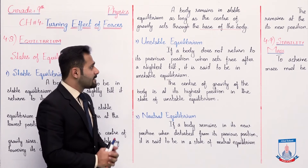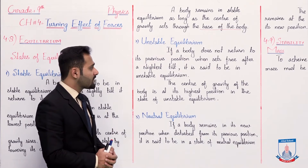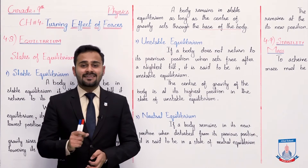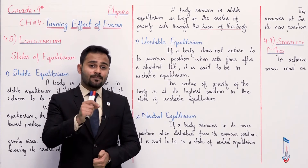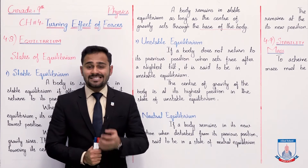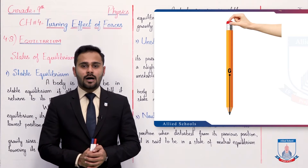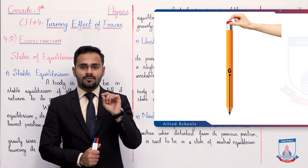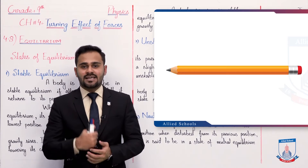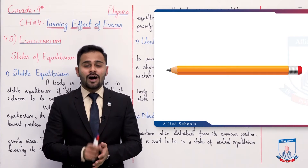Next state: unstable equilibrium. If a body does not return to its previous position when set free after the slightest tilt, it is said to be in unstable equilibrium. Jab ek body ko aap slightest tilt karein aur woh apni original position par wapas na aaye, to hum kahenge ki yeh body unstable equilibrium ki state mein mojood hai. Like for example, a pencil balanced on its tip — jaise hi aap isko slightly tilt karein aur set free kar dein, the pencil will fall over.